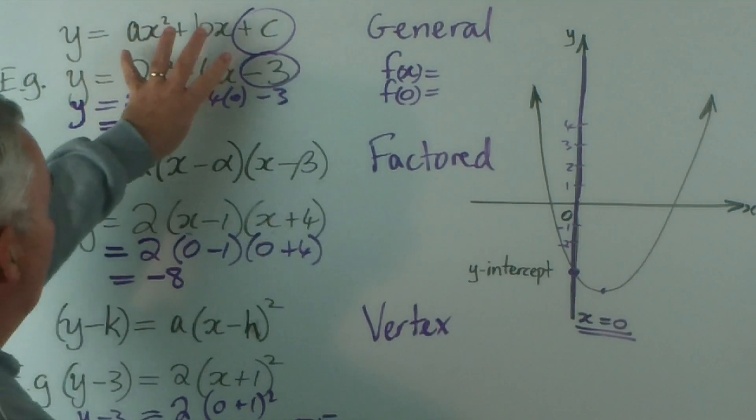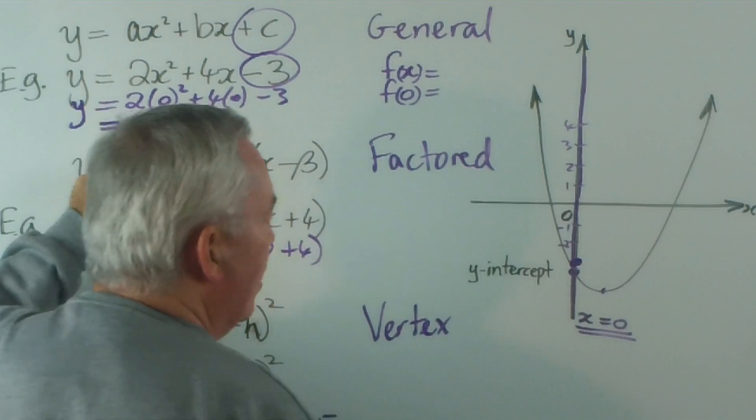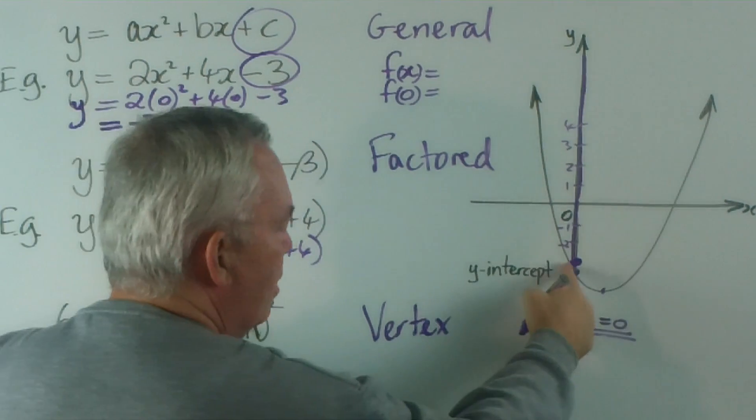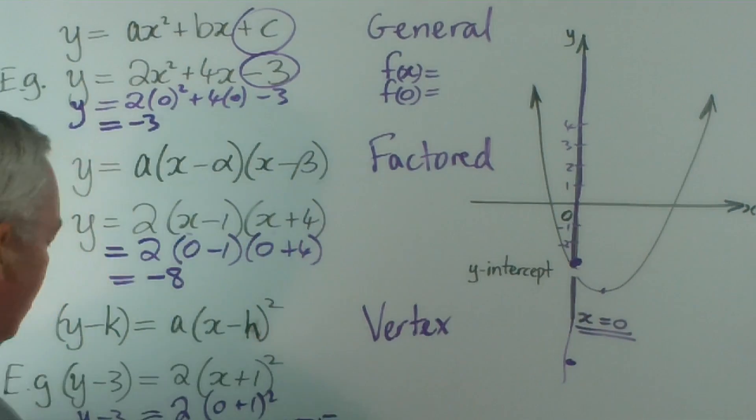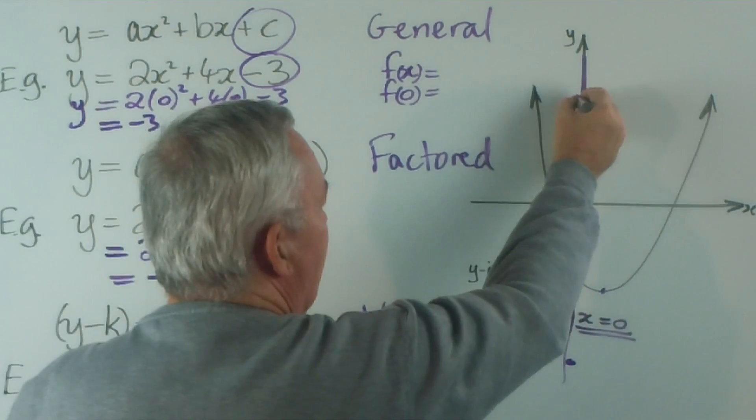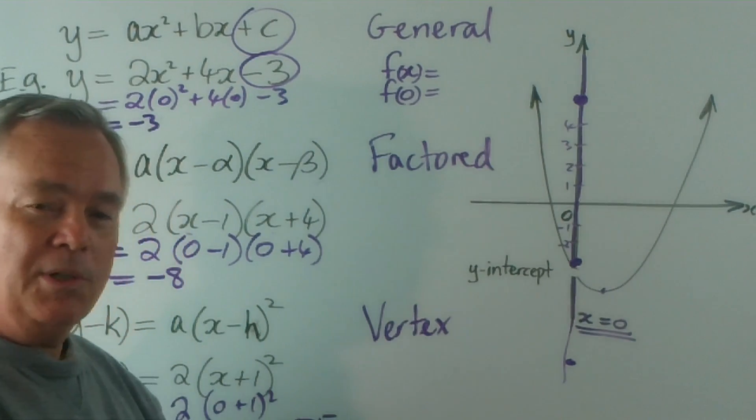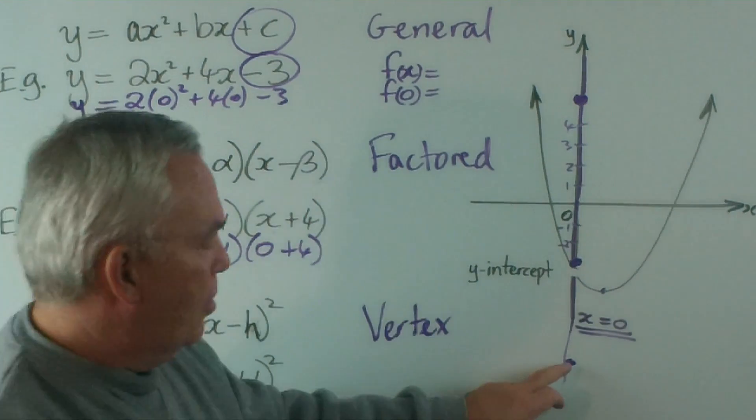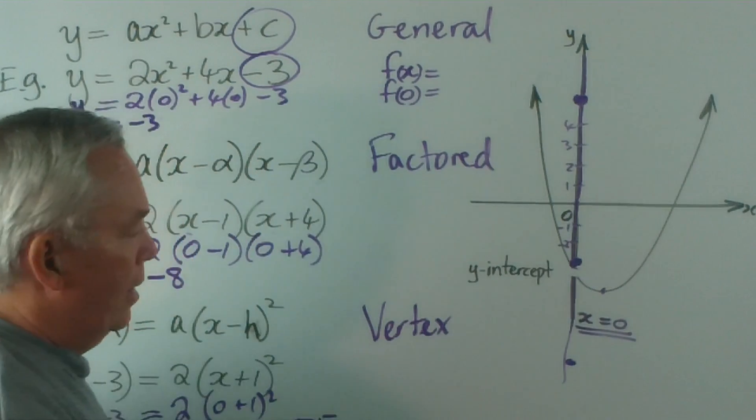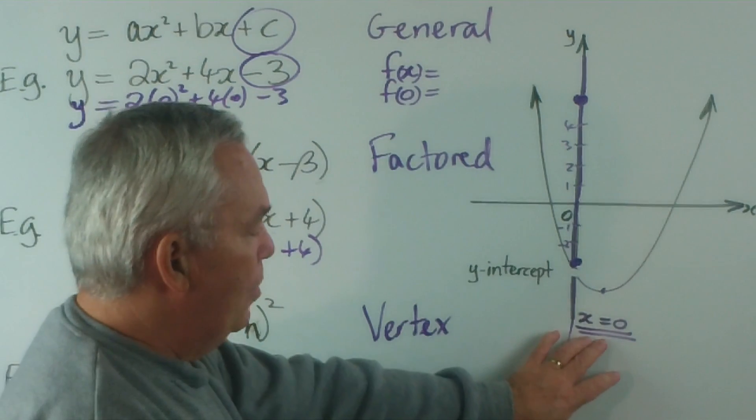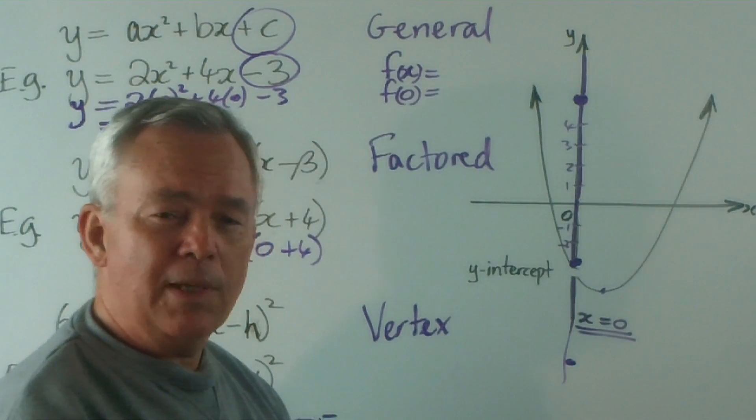So this particular parabola would go through negative three, this one would go through minus eight, and this parabola would go through plus five. At this point we don't know where else they go, but that's not our job in this video. Our job is simply to identify the point on the y-axis where the parabola passes. Just remember, the heading would be: y-intercept, x = 0.